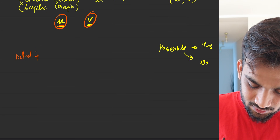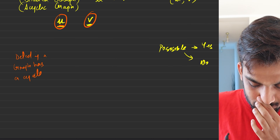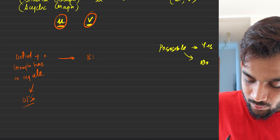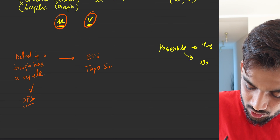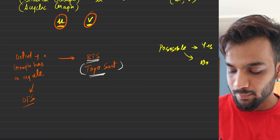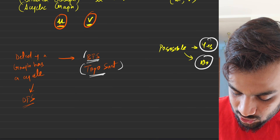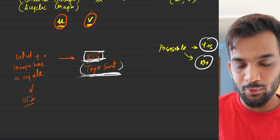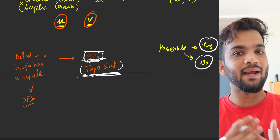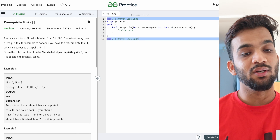The question is straightforward: either detect if the graph has a cycle — you can use DFS for that since it's a directed graph — or use BFS-based topological sort. Since the second part of the problem asks for the ordering, I'll solve this using BFS topological sort. You can definitely do it using DFS as well; I've already taught how to detect a cycle in a directed graph, so you can go back and use that approach.